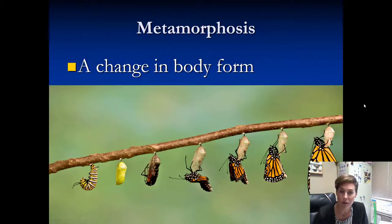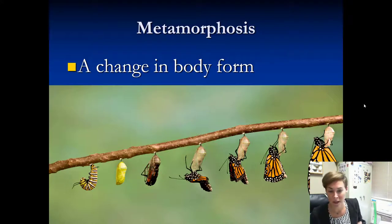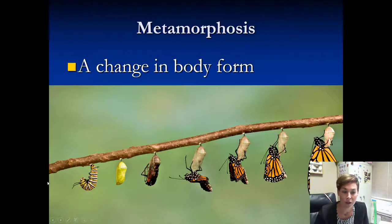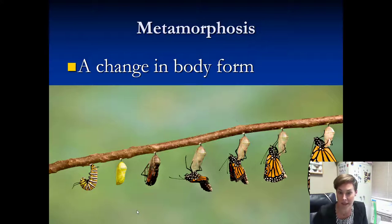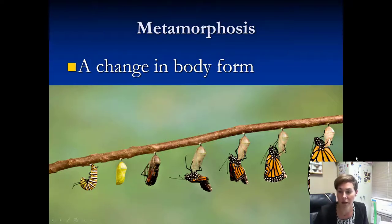The term metamorphosis is defined as a change in body form. If you look at a butterfly, for example, that caterpillar looks nothing like it will when it becomes the adult — they look completely different; you almost wouldn't be able to connect the two as the same insect. So metamorphosis is this change in body form, and insects change multiple times during their life to become the adults that they are.